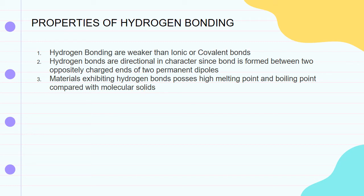Materials exhibiting hydrogen bonds possess high melting points and boiling points compared with molecular solids. These are the key properties of hydrogen bonding: they are directional in character, and materials with hydrogen bonds have high melting and boiling points.